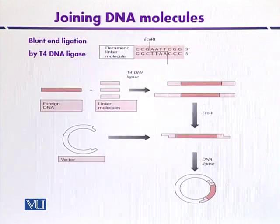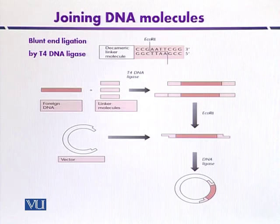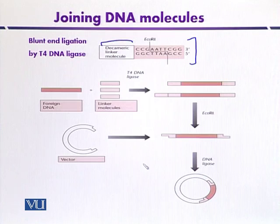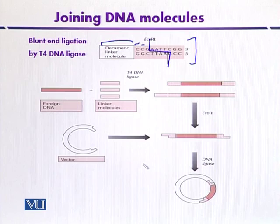This diagram will explain how blunt end ligation can be carried out using T4 DNA ligase. Here we have a linker molecule called a decameric linker molecule because it is composed of 10 bases: C, C, G, A, A, T, T, C, C, G. It also contains restriction sites for the enzyme EcoR1.